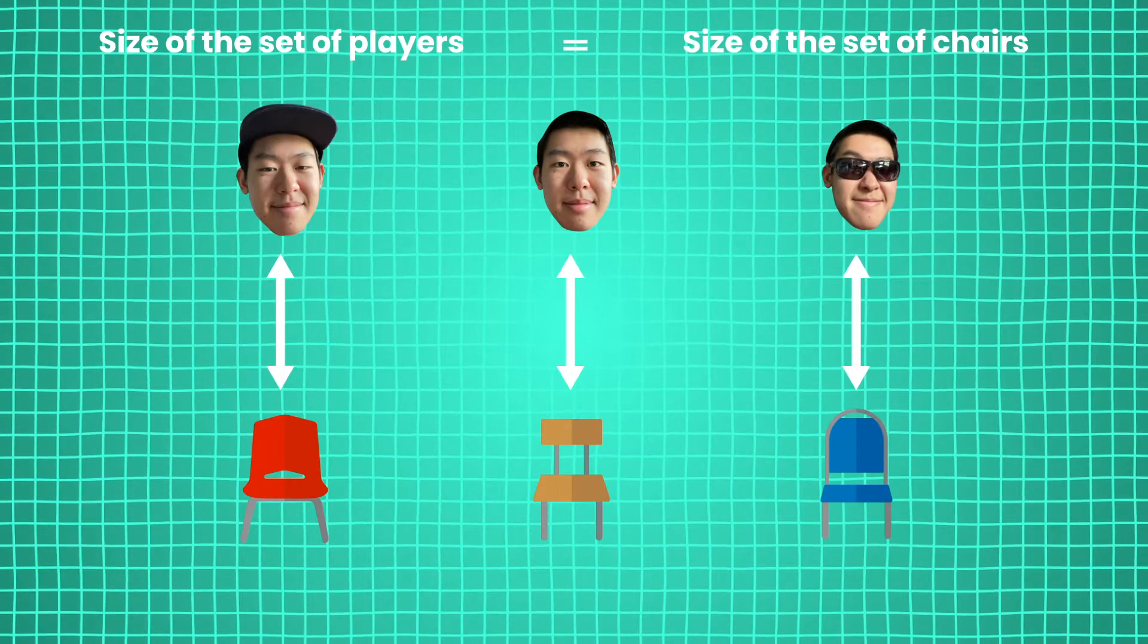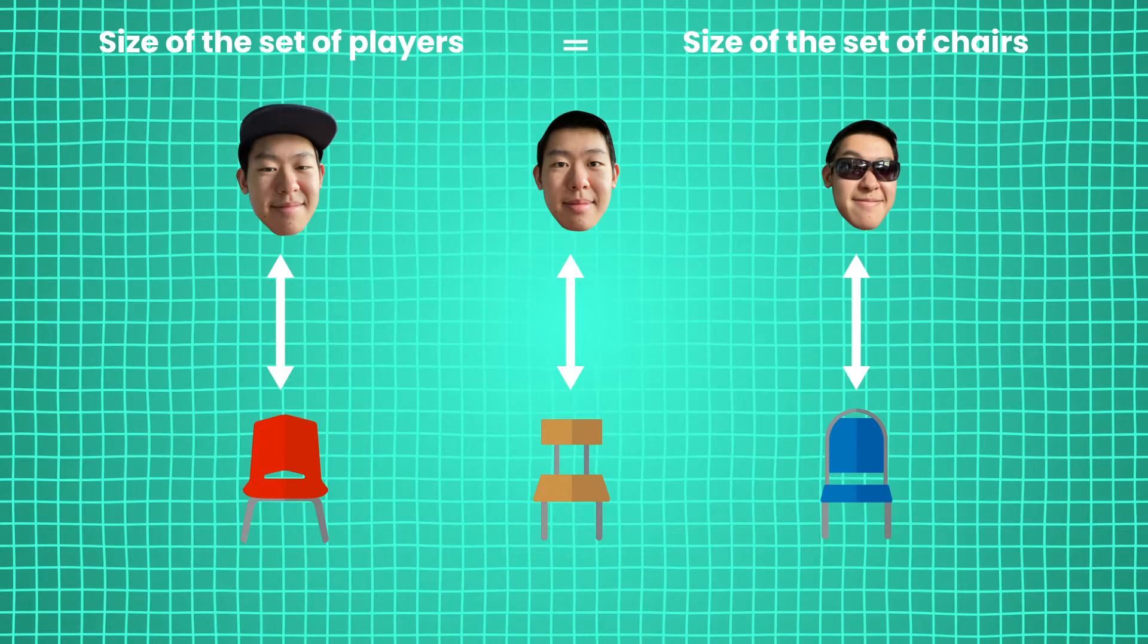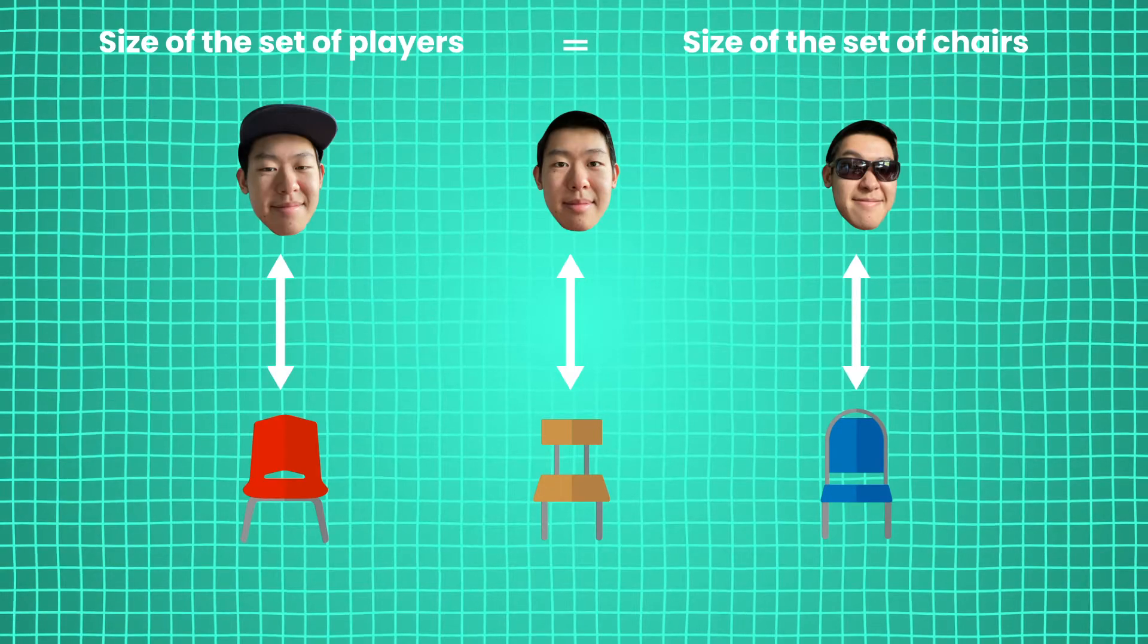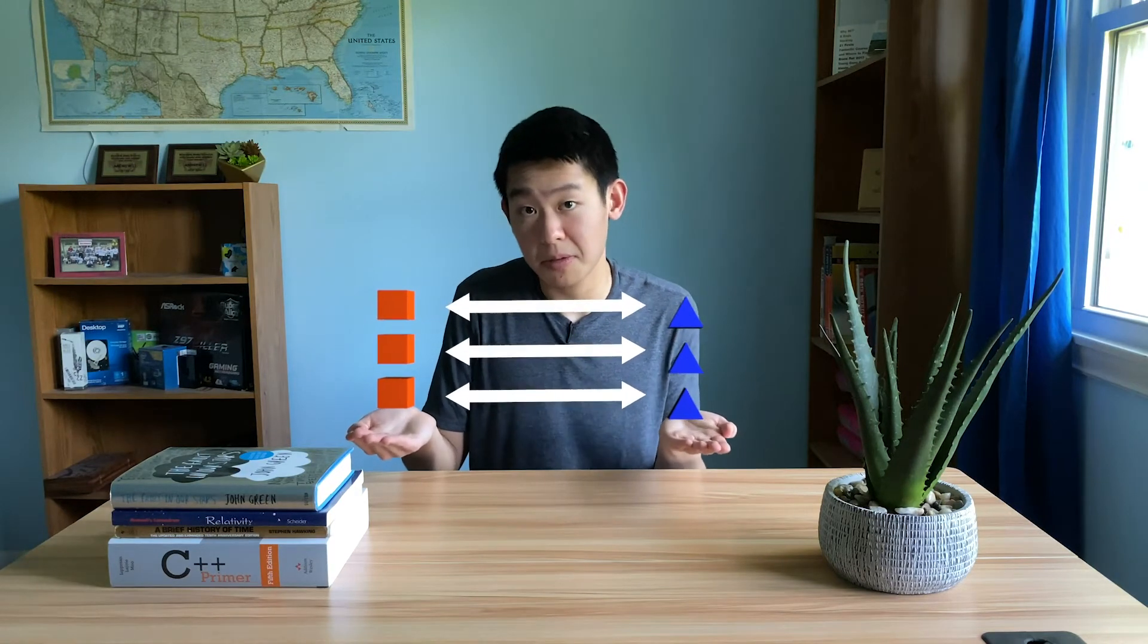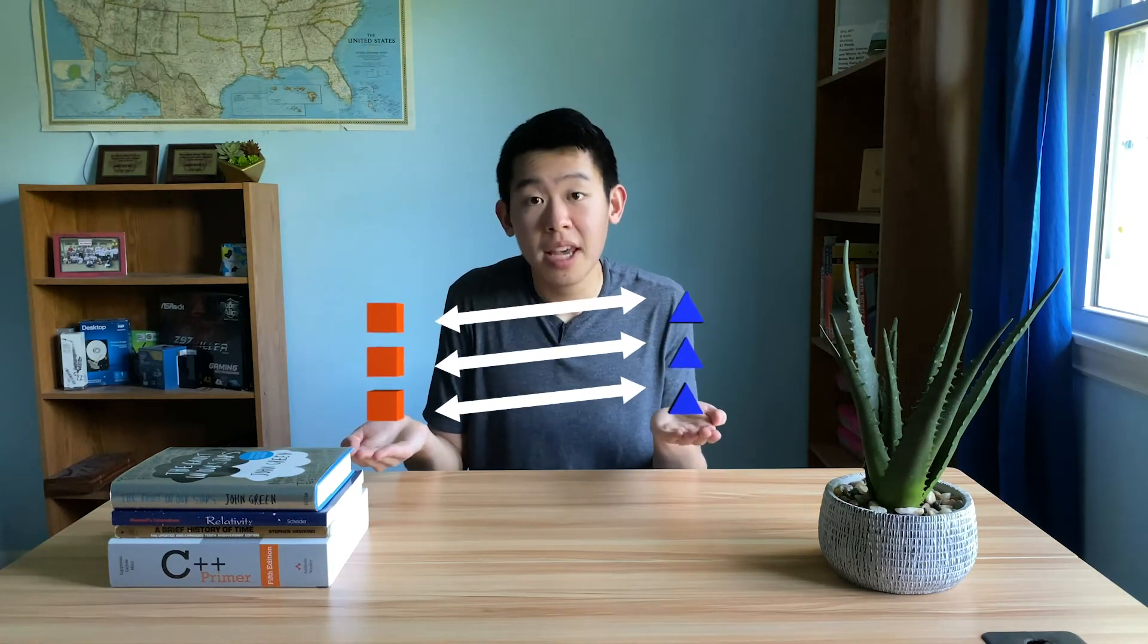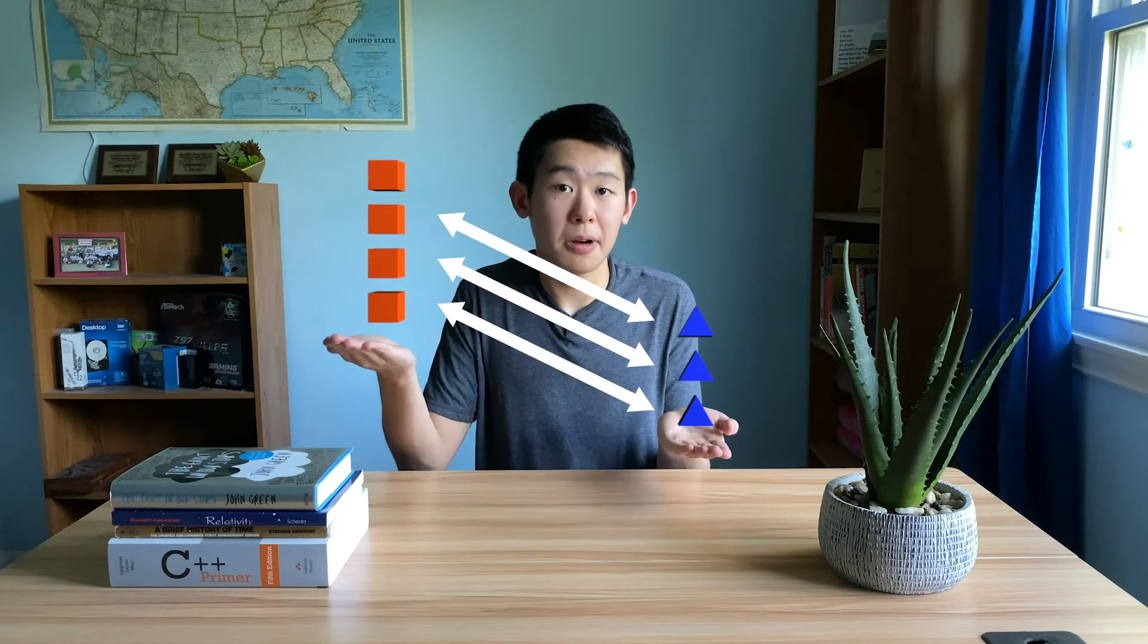If everyone had a chair to sit in, we'd have an equal number of chairs and players, and a boring game. This means to figure out if any two sets of things have the same size, all you need to do is create a unique pairing between their items. There's no need to count, and if you can't, then one set must be larger than the other.